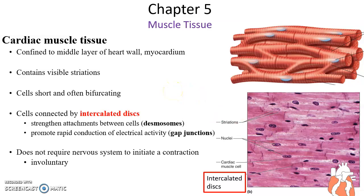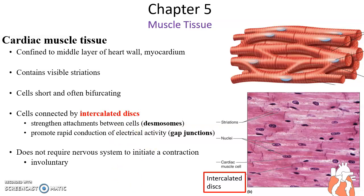These discs are dense with protein — specifically protein forming the desmosomes, the rivets that will firmly attach the cells together. And also gap junctions, the protein structure spaces that allow fluids to pass between the cardiac muscle cells, which helps to move the electric activity, the electric current, along cardiac muscle tissue. Cardiac muscle tissue does not need the nervous system to contract, and it is involuntary — we do not consciously have to think about our heart beating.